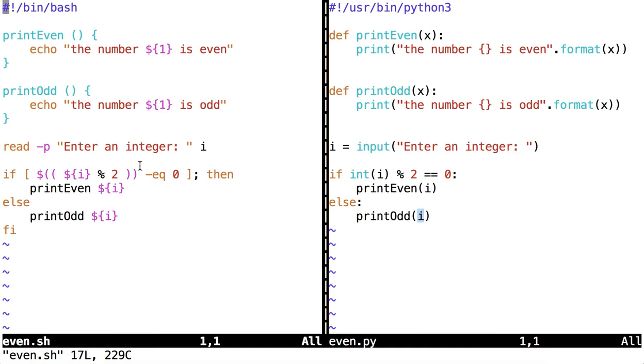Even though the syntax is different, we're doing the same thing over here in bash. We're getting the user to assign a value to i, and then we are evaluating whether i mod 2 is equal to 0.